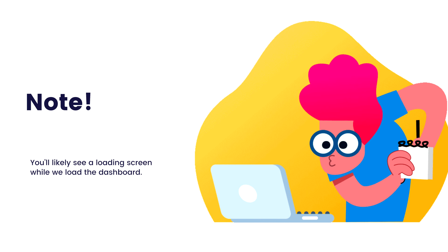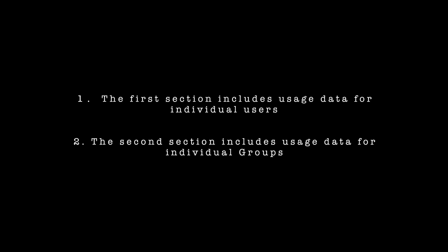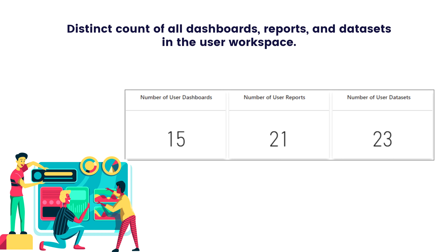After the dashboard loads, you see two sections of tiles. The first section includes usage data for individual users, and the second section has similar information for groups. The first metric you are going to see is the distinct count of dashboards, reports, and datasets in the user workspace, so you will know how many dashboards, reports, or datasets there are.